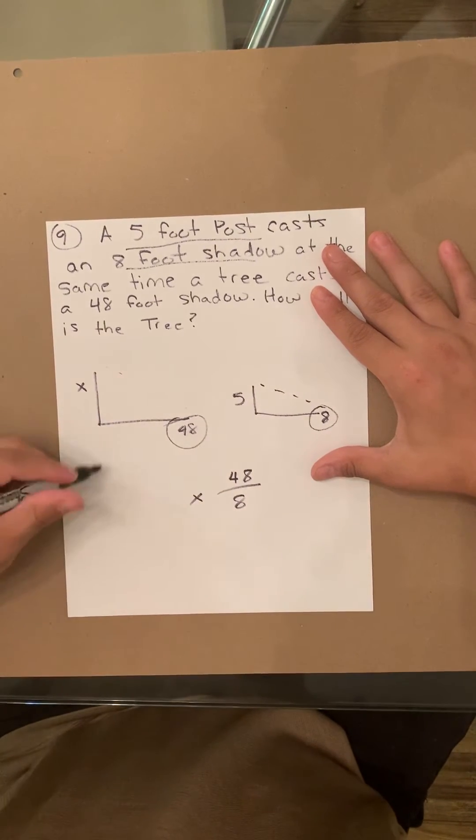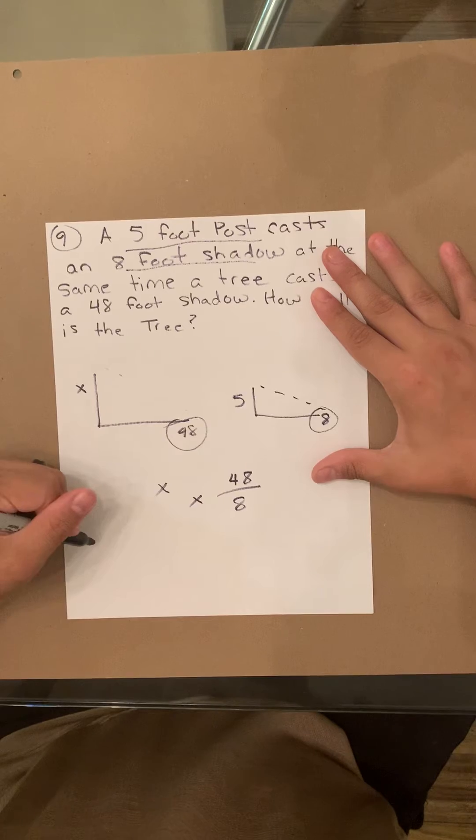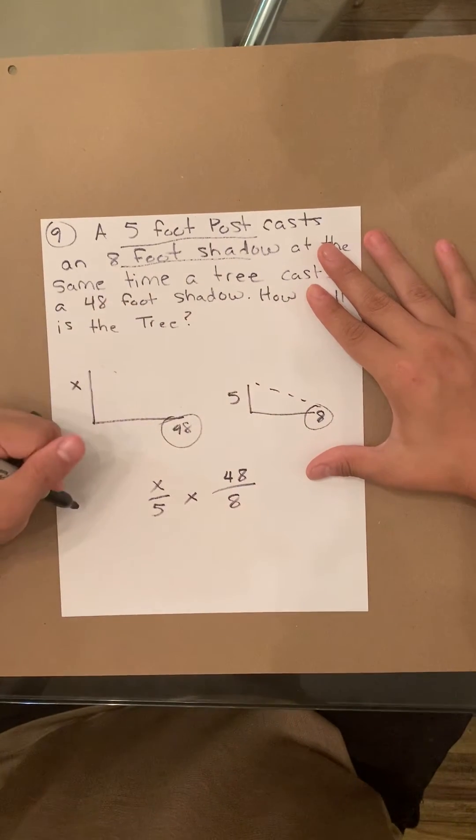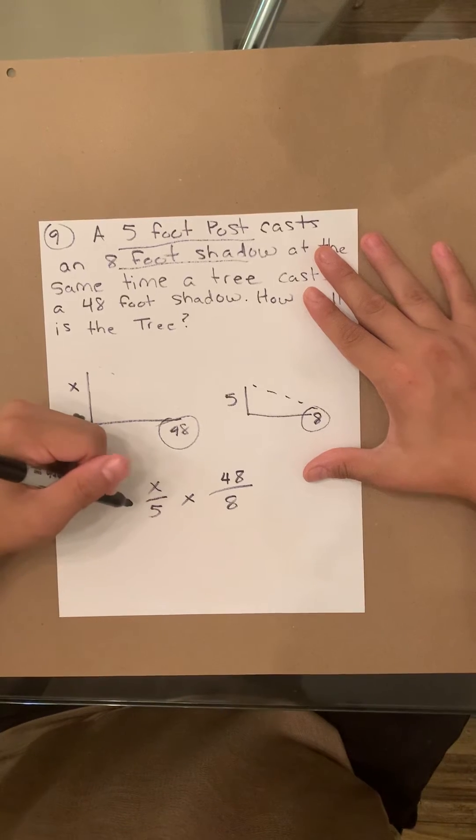Next, you're going to take X, and then you're going to put 5, which is the tree, because it's side by side. And all you're going to do is cross multiply.